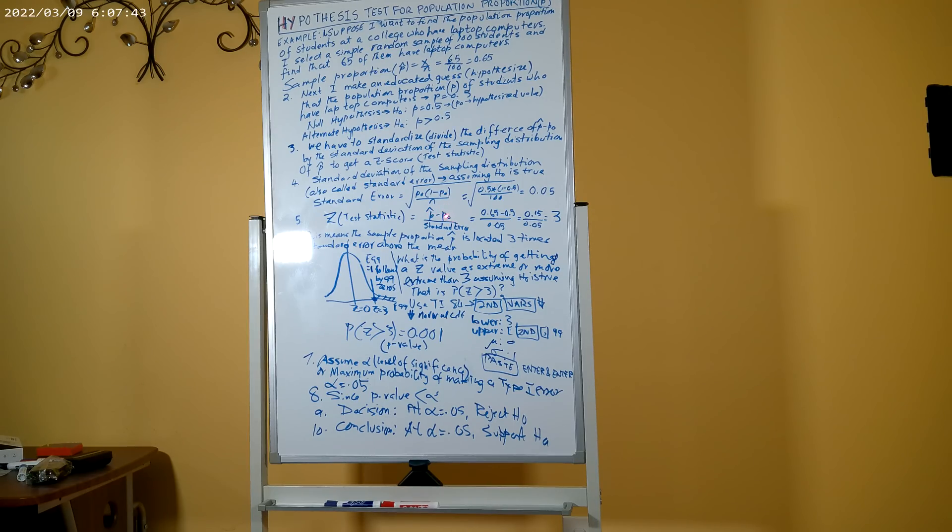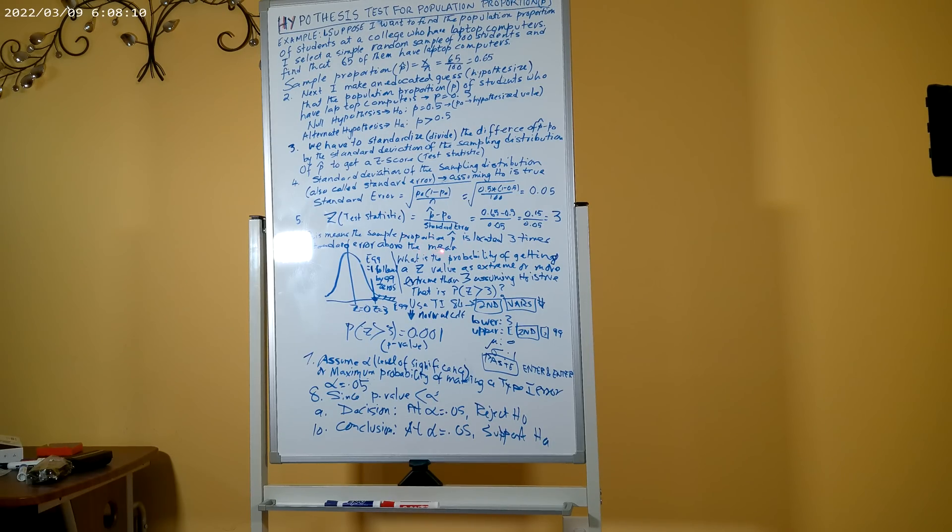So my test statistic is the difference of sample proportion p hat from the hypothesized population proportion p₀. So p hat minus p₀ divided by the standard error: 0.65 minus 0.5 divided by 0.05, which is 0.15 divided by 0.05, equals 3. That means the sample proportion of 0.65 is located three times the standard error above the hypothesized population proportion of 0.5.